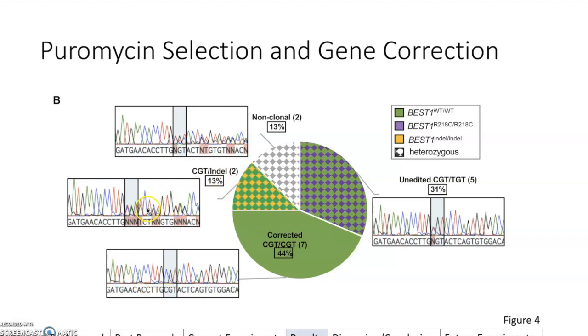But if you look at one of the other clones that created an indel, for example, you have N instead of a nucleotide, just because right here you have overlapping peaks. It's very difficult to differentiate, this one is an A, this is a T. It's basically impossible for this one. It also created non-clonal lines, two of them, and then a good amount of unedited CGT, TGT, clonal lines.